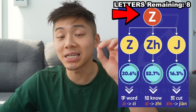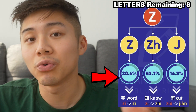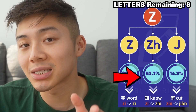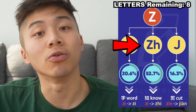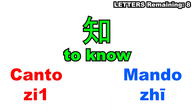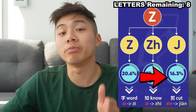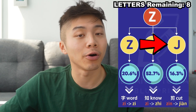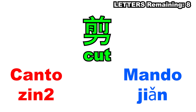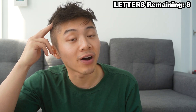The next one is the Cantonese Z. About 20% of the time, that Z will remain a Z — so 'zi' for word becomes 'zi' in Mandarin. Most of the time it will become ZH — so 'zi dou' for 'to know' becomes a ZH sound in Mandarin. And about 16% of the time, it will become a J — so 'zin' for 'to cut' becomes 'jian' in Mandarin.